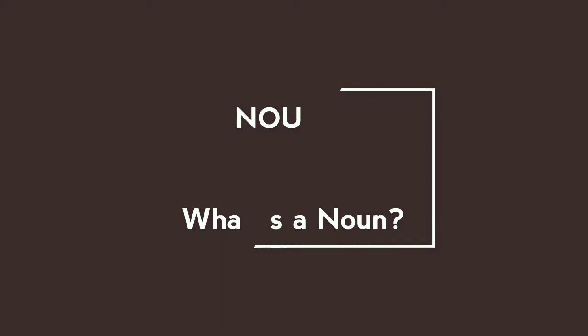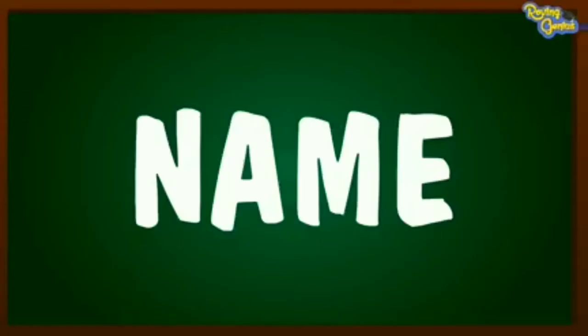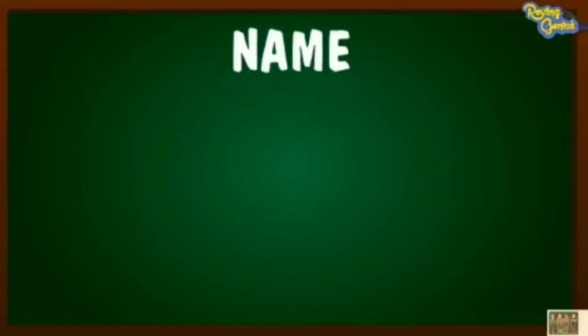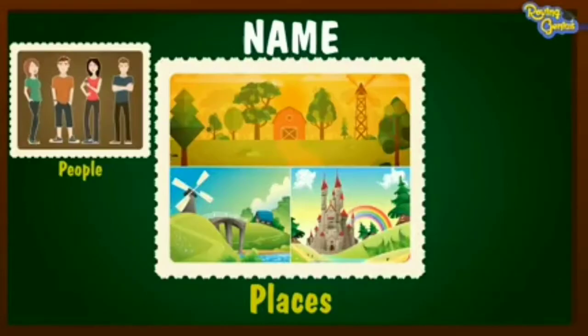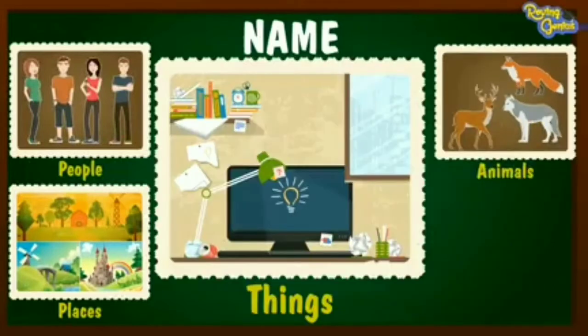What is a noun? Everything around us has names. So a noun is a naming word. It is the name of people, places, animals or things.